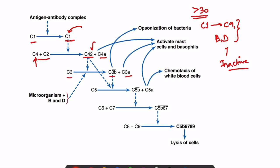Then C5 gets activated into C5B and C5A, and subsequently C6, C7, C8, and C9 are also activated. Finally a product is formed which is important for the lysis of cells. So this is the order of activation of the complement system.